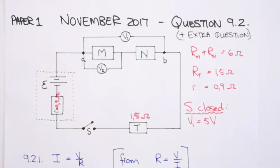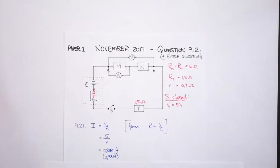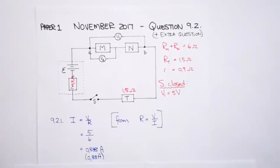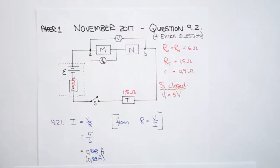So for 9.2.1, calculating the current delivered by the battery—that is the current in the entire circuit. This is a series circuit. There's no splitting up of current. So from this equation, which is on your data sheet, we can say that I is V over R. We are only working between A and B now, which is the total current flowing through between A and B.